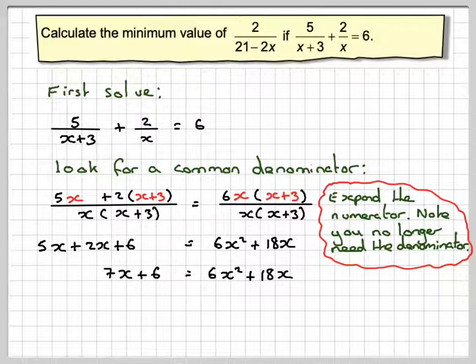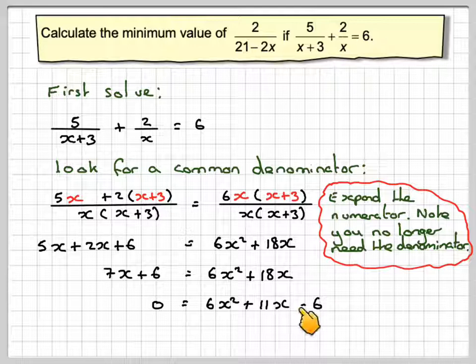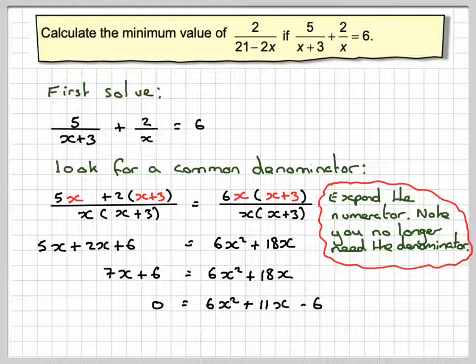Remind you not to do too much in any one step. So we're going to take 7x. So 18x take 7x gives me 11x. And then we're going to take 6 as well. It will be equal to 0. So we need to solve that quadratic.